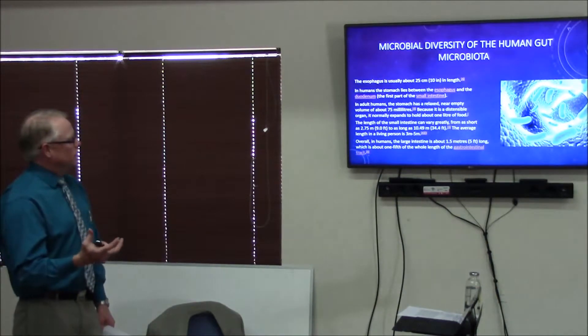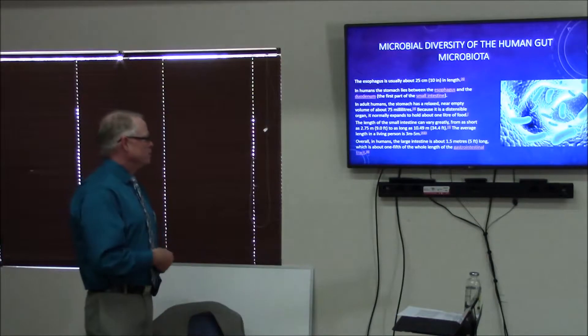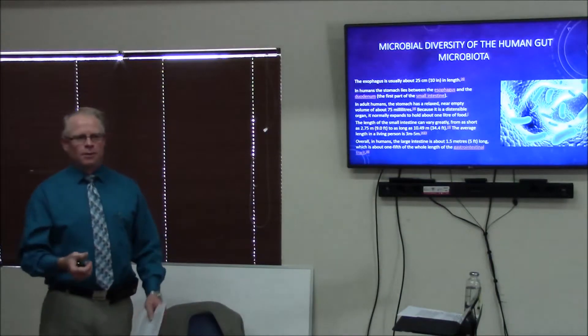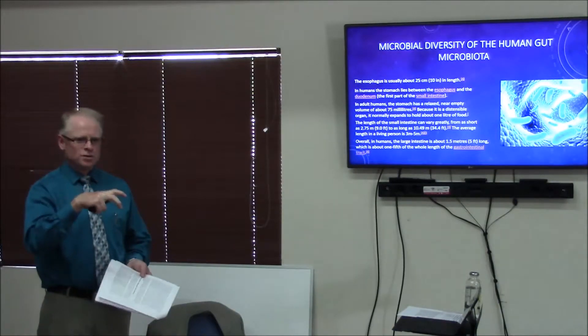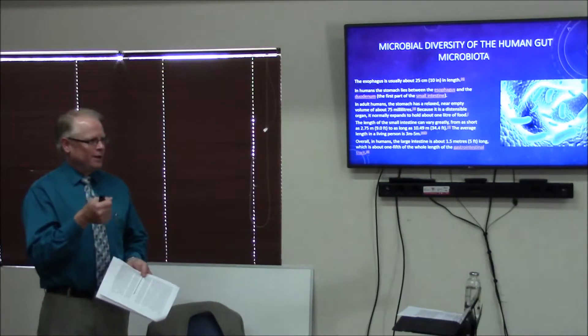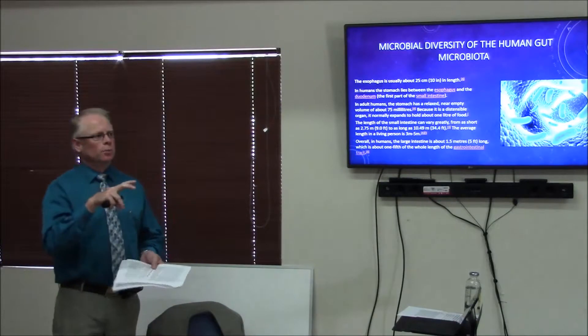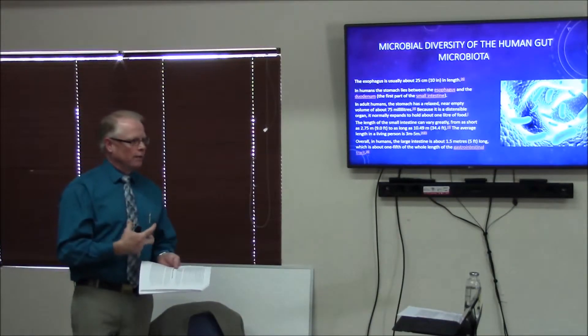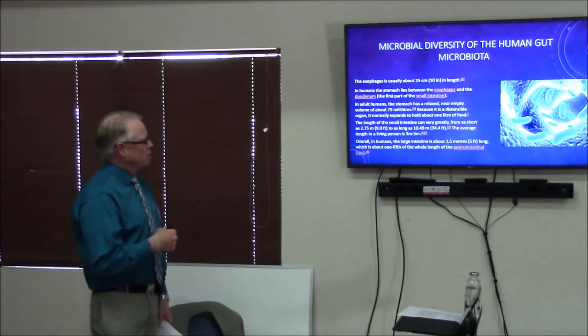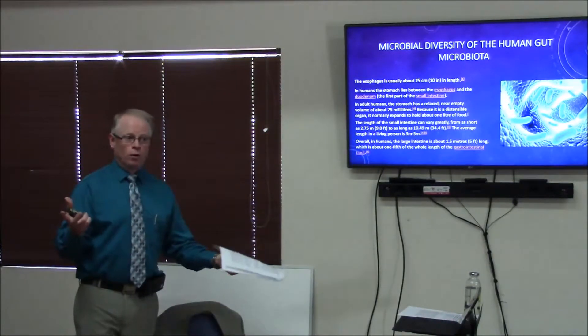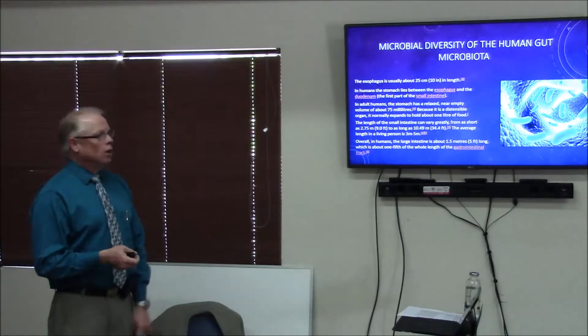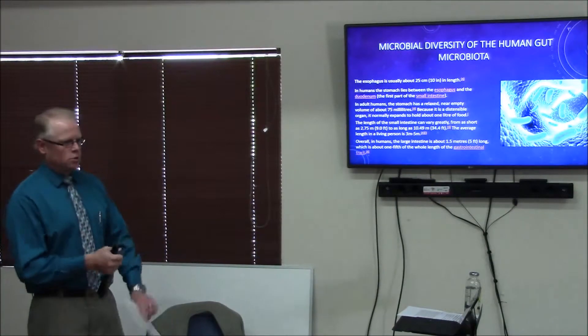We're actually inhibiting that first stage of digestion. We look at just structurally, we have our esophagus, about 10 inches in length. So we've got our mouth, esophagus, the human stomach lies between the esophagus and the duodenum, for the first part of the small intestine. In adult humans, the stomach has a relaxed, near empty volume about 75 milliliters. Because it's distendable, it is a distendable organ, it normally expands to hold about one liter of food.